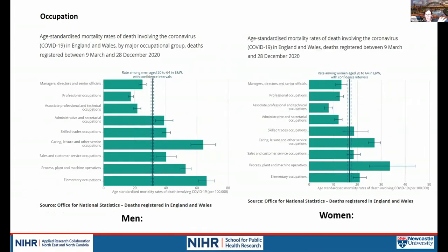The third axis of inequality goes beyond area-level measures to individual-level socioeconomic status. ONS and PHE data on COVID-19 mortality by occupation show that, for both men and women, there is broadly a social gradient — an occupational gradient — in mortality rates. There are some exceptions, such as caring and leisure service occupations, but broadly the more elementary occupations have much higher mortality rates than senior professional occupations. This pattern is reinforced by literature from other European countries.